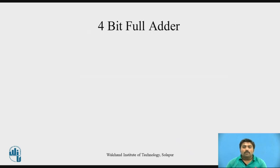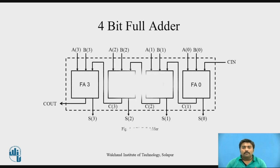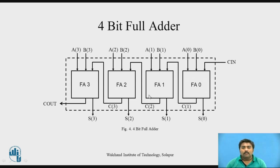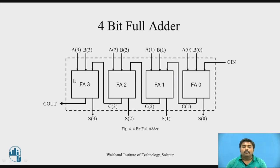Now let us go for the 4-bit full adder. This 4-bit full adder is implemented or created with the help of 4 full adders — 1-bit full adders. If you consider the diagram, this is a single bit full adder, and 4 single bit full adders are used. If you consider this complete box as one design, you can say that this is a 4-bit full adder. So you can implement a 4-bit full adder with the help of 4 1-bit full adders. We are going to use the 1-bit full adder as a component to design the 4-bit full adder.